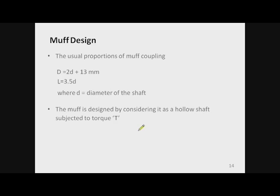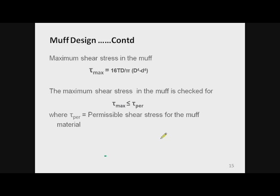The next part is the muff design. Initially we choose various dimensions using standard proportions: capital D is taken as 2d plus 13, and length L is taken as 3.5d. As discussed, the muff, which is a hollow cylinder, is subjected to torque. The maximum shear stress in the hollow cylinder is given by a standard expression. Since all parameters are known, we calculate τ_max and check that it is less than τ_permissible. If τ_max is greater, we redesign by increasing capital D and checking again until the condition is satisfied.